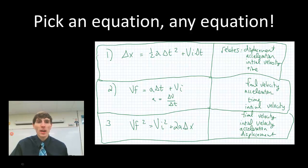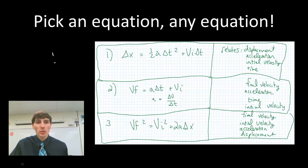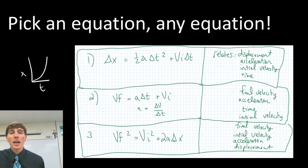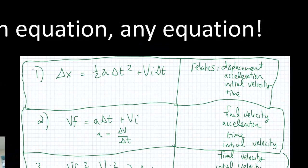The three equations we have are three kinematic equations derived earlier in the unit. The first one came from our position-time graph — rearranged a bit — and this equation relates displacement, acceleration, initial velocity, and time. So if I have three of these four variables, I can use this first equation.